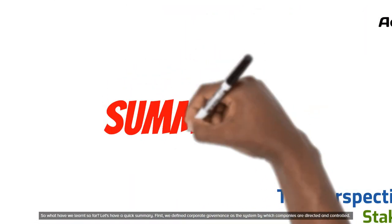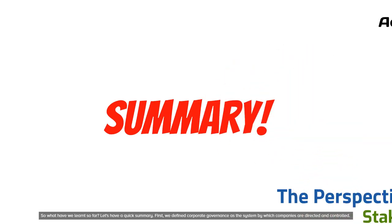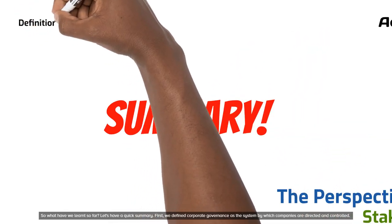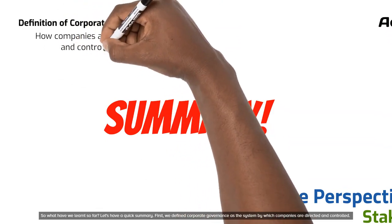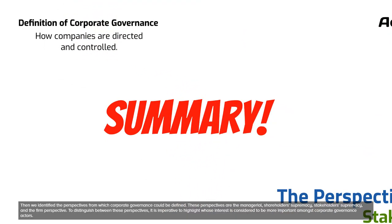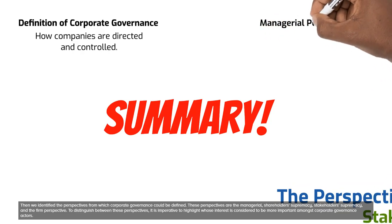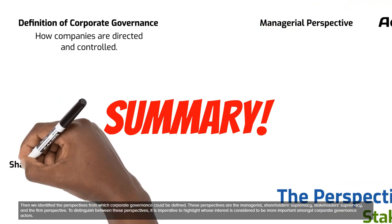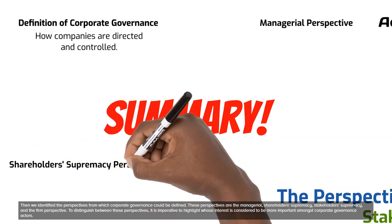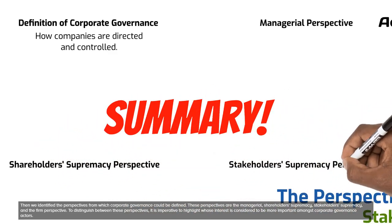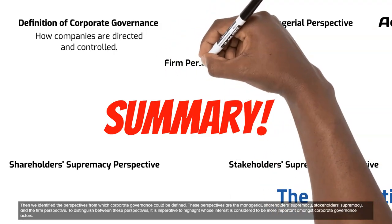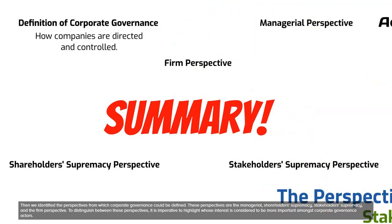So what have we learned so far? Let's have a quick summary. First, we defined corporate governance as the system by which companies are directed and controlled. Then we identified the perspectives from which corporate governance could be defined. These perspectives are the managerial, shareholder's supremacy, stakeholder's supremacy, and the firm perspective. To distinguish between these perspectives, it is imperative to highlight whose interest is considered to be more important amongst corporate governance actors.